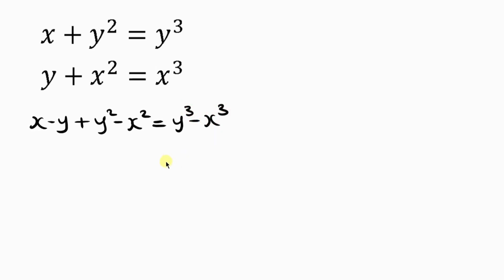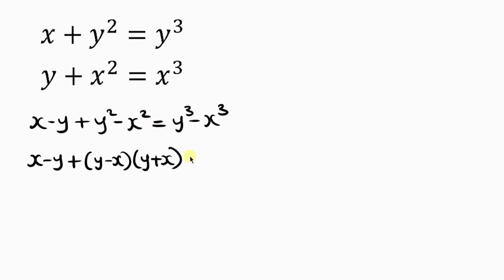Our first step towards solving this question is to subtract the second equation from the first equation. So I'm going to be having x minus y plus y squared minus x squared equal to y cubed minus x cubed. This is difference of two squares and this is difference of two cubes. So factorizing: y squared minus x squared becomes y minus x times y plus x, and y cubed minus x cubed becomes y minus x times y squared plus xy plus x squared.